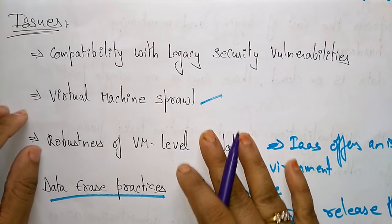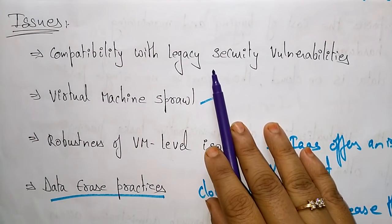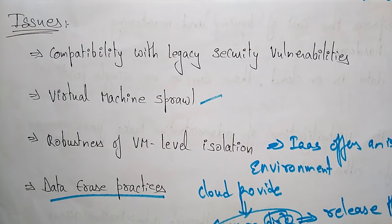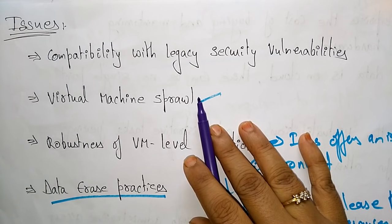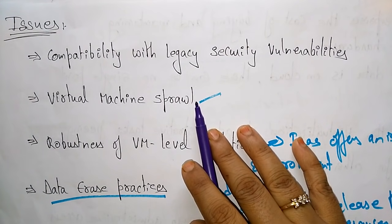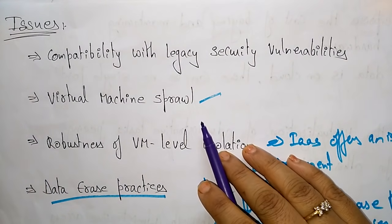Now let's see the issues faced by Infrastructure as a Service. The first issue is compatibility with legacy security vulnerabilities — IaaS offers customers the ability to run legacy software, which exposes customers to all the security vulnerabilities of such legacy software. The second issue is virtual machine sprawl: virtual machines can become out of date with respect to security updates. Cloud providers need to automatically update such virtual machines, but it is somewhat hard and complex to maintain this mechanism.